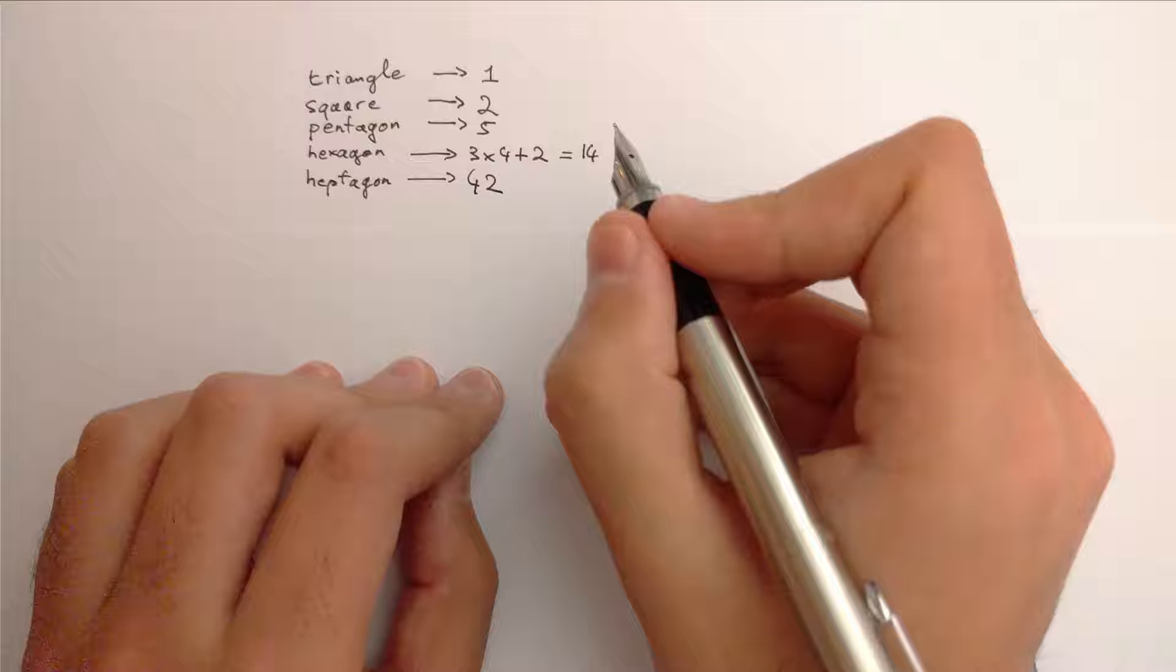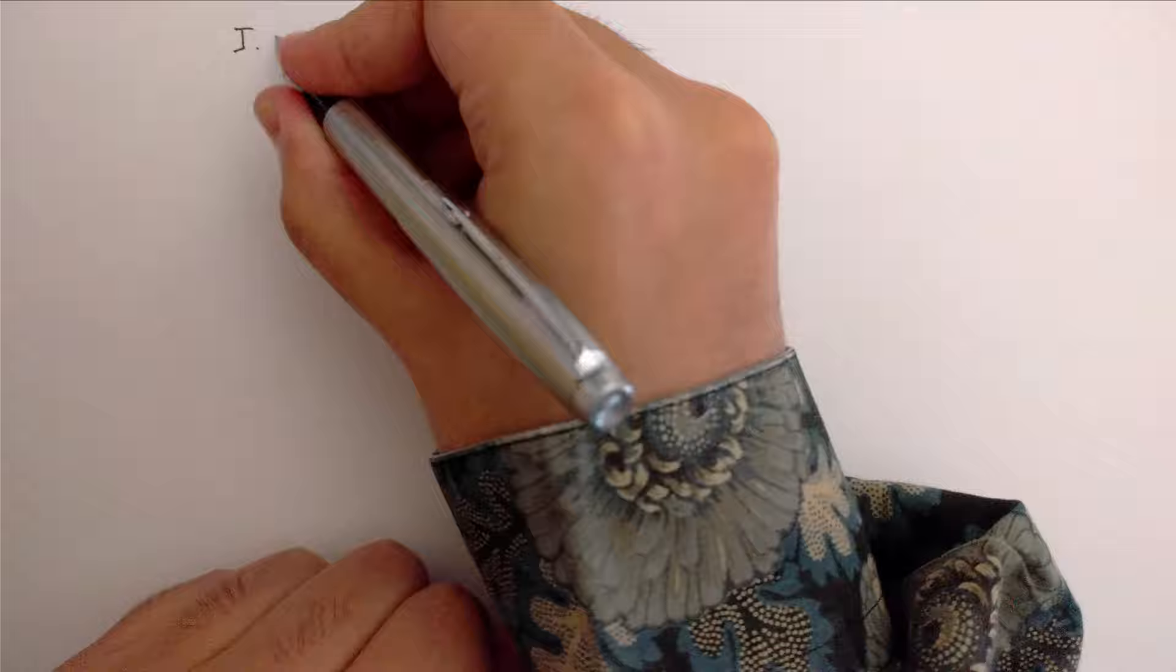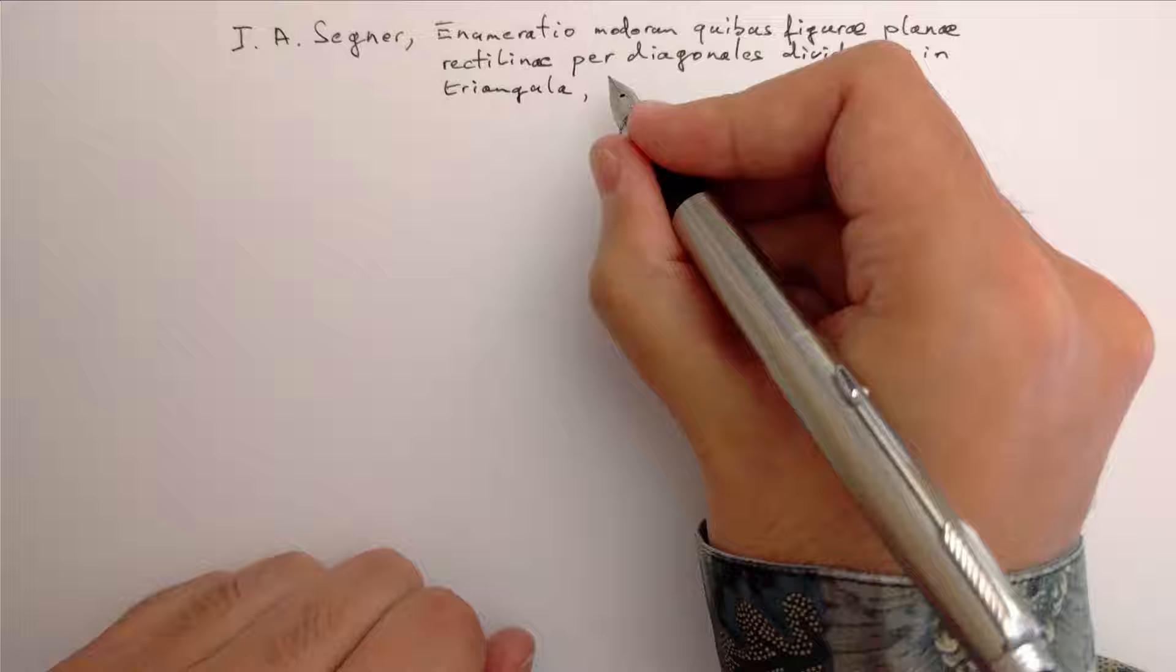You may wonder whether there's a more systematic way of getting these numbers, and you wouldn't be the first. In the mid-18th century, a guy called Signer came up with the following idea.